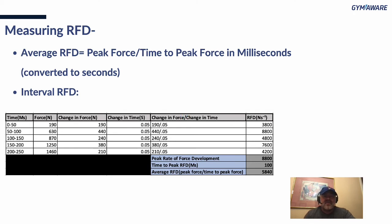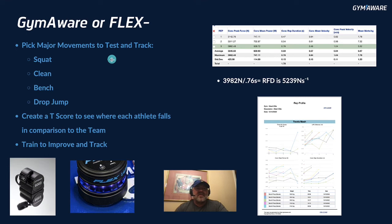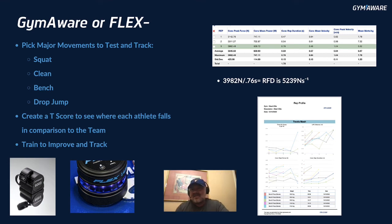For practical application, I recommend picking major movements to test and track — squat, clean, bench press, or a drop jump which GymAware can measure. Create a T-score: if you have a team of 30 or more people, find out where each athlete ranks among the team. You'll see who needs to work on rate of force development and who doesn't. If someone is at the top, focus on other qualities; for those at the bottom, there's plenty to improve.